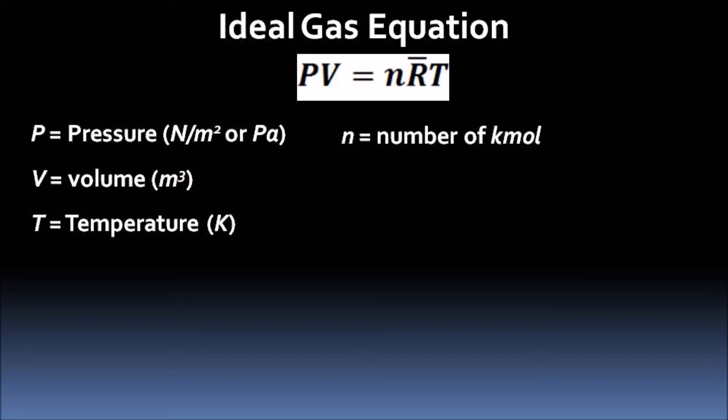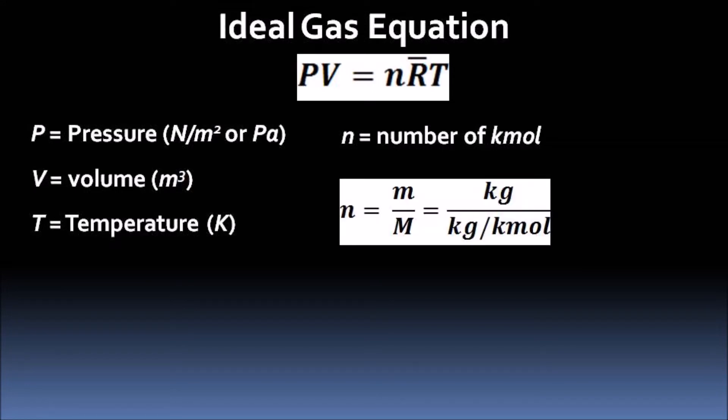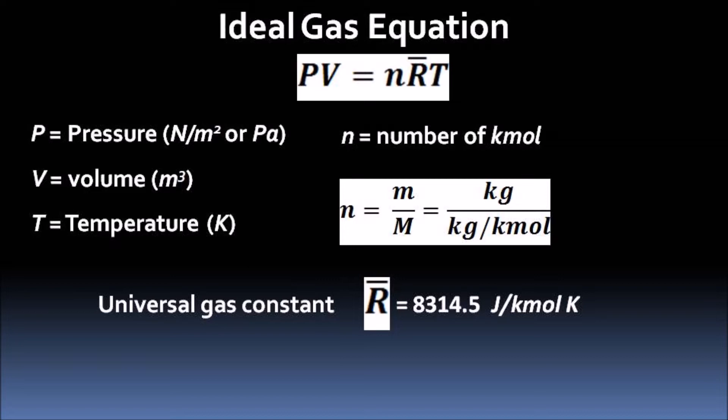n denotes the number of kilomoles in the gas, defined as the mass of the gas in kilograms divided by the molecular weight of the gas. The universal gas constant R̄ has a value of 8314.5 joules per kilomole Kelvin.